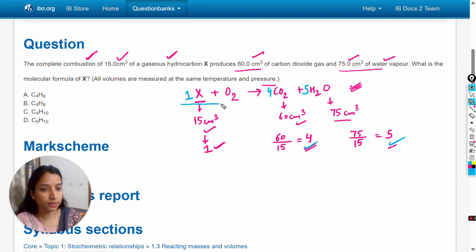Now we have to calculate the value of X. X is the molecular formula of hydrocarbon. Hydrocarbon is the compound containing hydrogen atoms and carbon atoms.